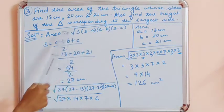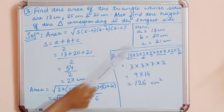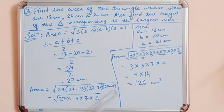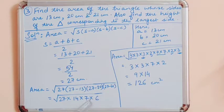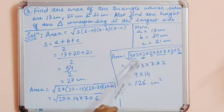We now have all values to substitute into the formula. Area = √(27 × (27−13) × (27−20) × (27−21)) = √(27 × 14 × 7 × 6). You can either multiply all numbers and find the square root, or find the prime factors of each number and take out common pairs from the square root.